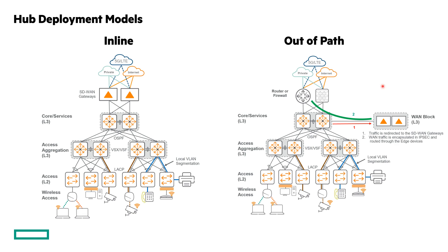Larger environments or environments that want dedicated WAN edge devices may choose to use the out-of-path model. This model makes it easier to scale out the number of SD-WAN gateways you have to meet your bandwidth requirements. The out-of-path model can also help simplify migrations with no hard outages to replace WAN edge devices and can make the migration routing a bit more straightforward. Additionally, many customers will leverage the out-of-path model during proof of concepts, as it's easy to drop in the SD-WAN gateways into the hub without major changes and then convert a few branches.